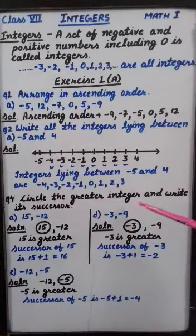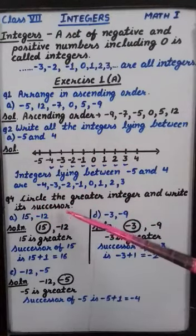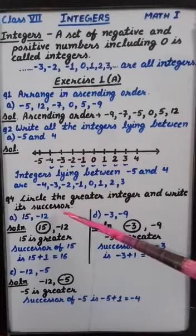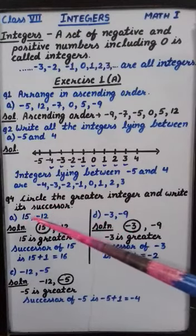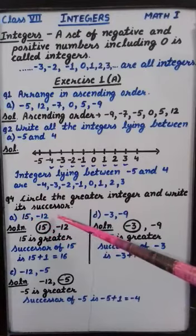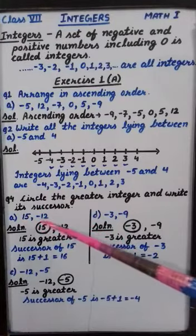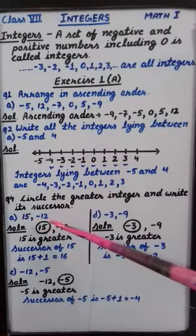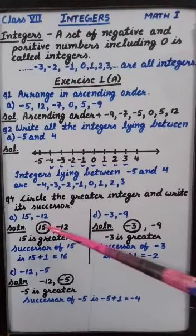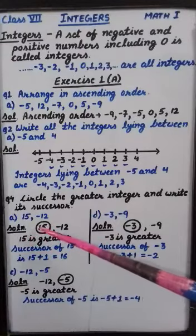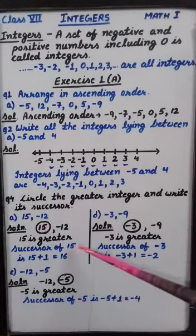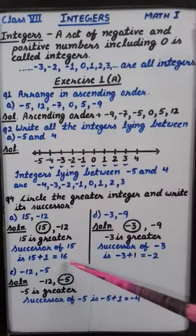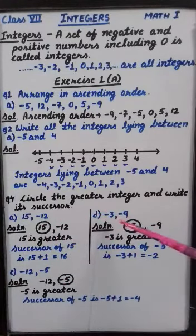Circle the greater integer and write its successor. Now successor is what? One more than the number. So now these are two numbers, 15 and minus 12. Now here as we all know that positive numbers are always greater. So which number is greater? 15 is greater. And what is the successor of 15? One more than 15, it will be 16. Now coming to next part of this.